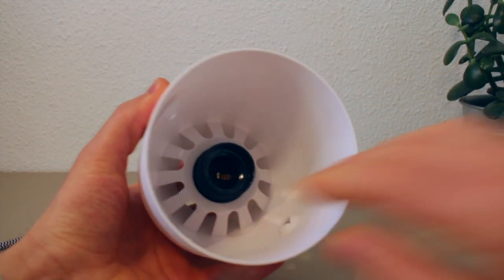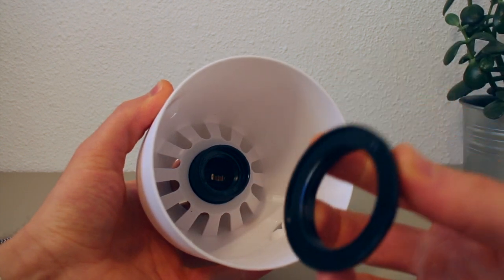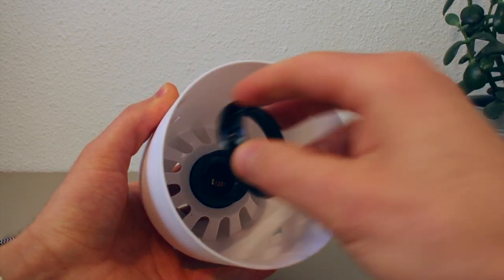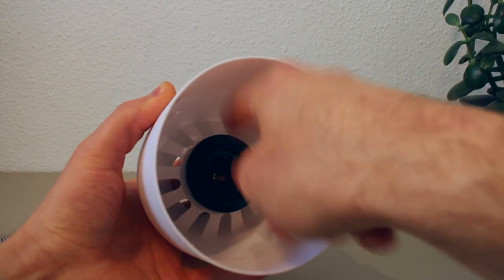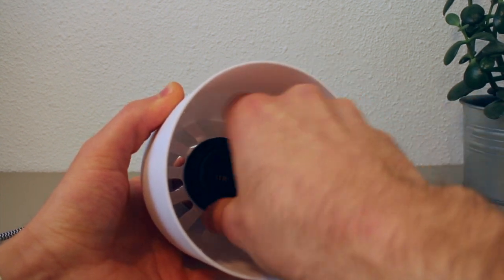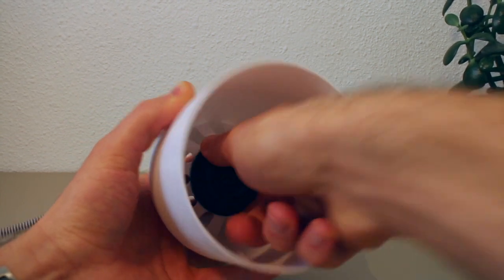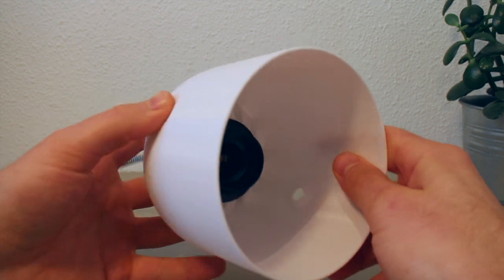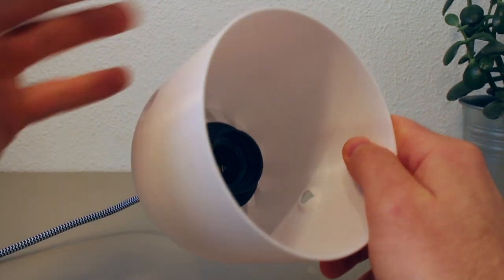Right. And then from the front you take the other piece of the light bulb socket and you screw it on here and you tighten it a bit like this. And there you have it. And of course we need to add a light bulb as well.